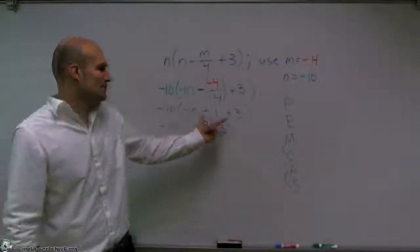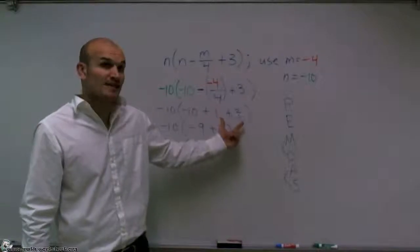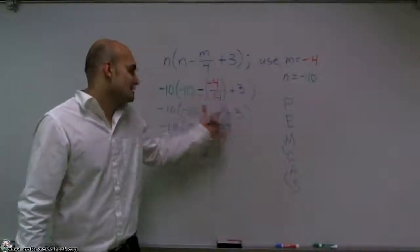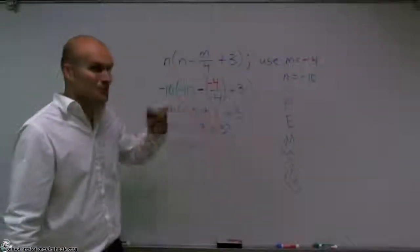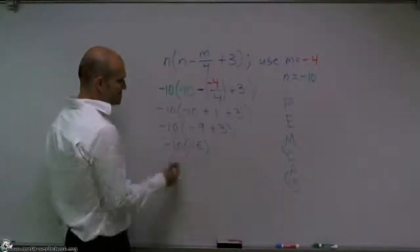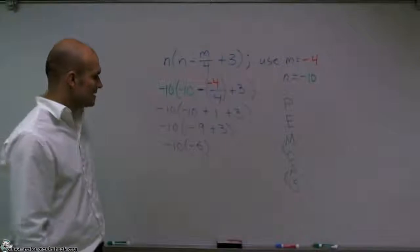See, be careful. If we would have done the 1 plus the 3, that would give us 4. Actually, this one, the addition, you know, really doesn't actually matter. This one we lucked out. But anyways, I'm still going to get negative 10 times negative 6.